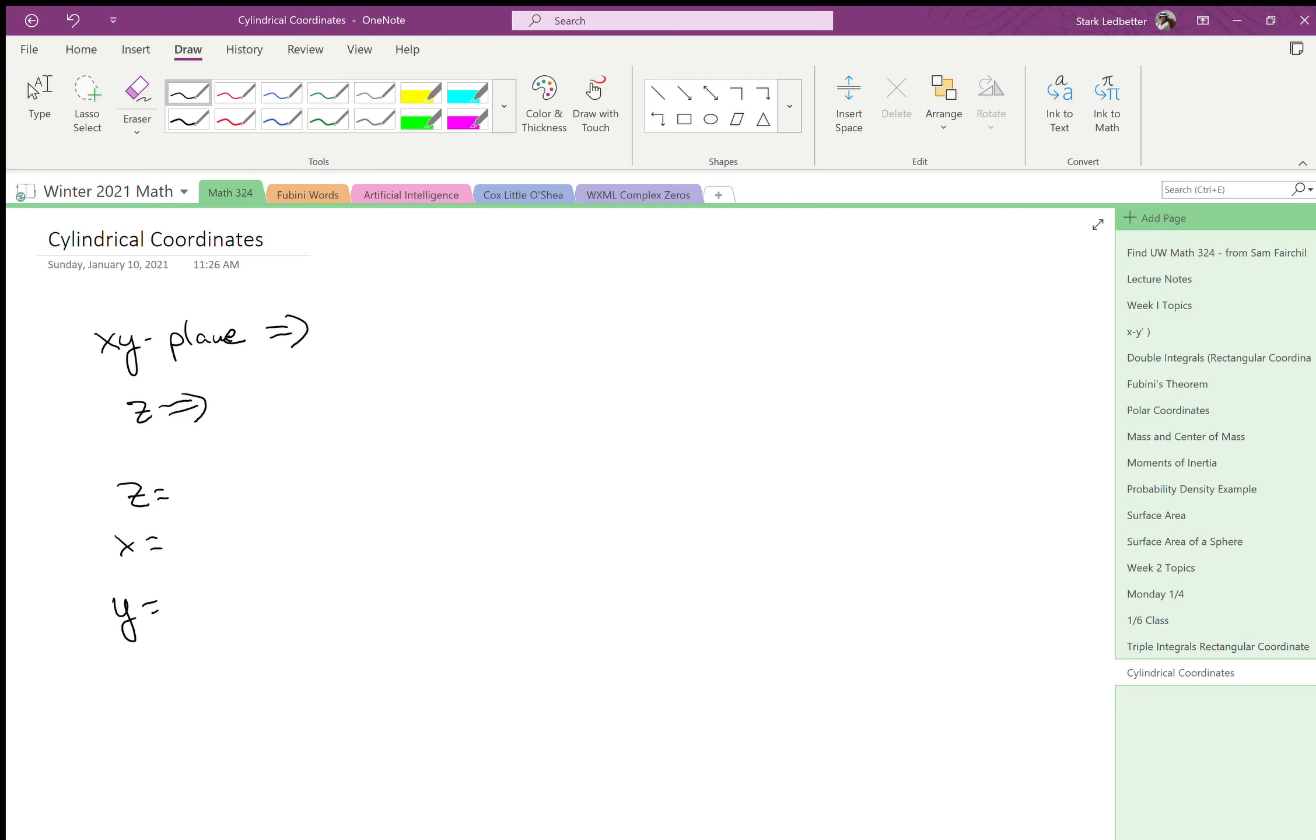Cylindrical coordinates should feel pretty familiar and the reason for that is that the z coordinate stays the same and in the x-y plane you're just working in polar. So you already know how to do this, you did a lot of this in Math 126.